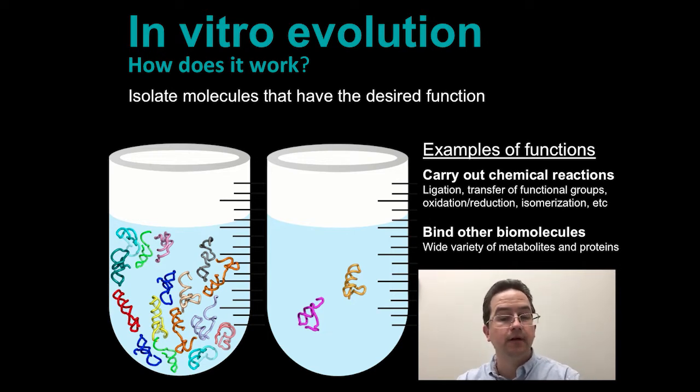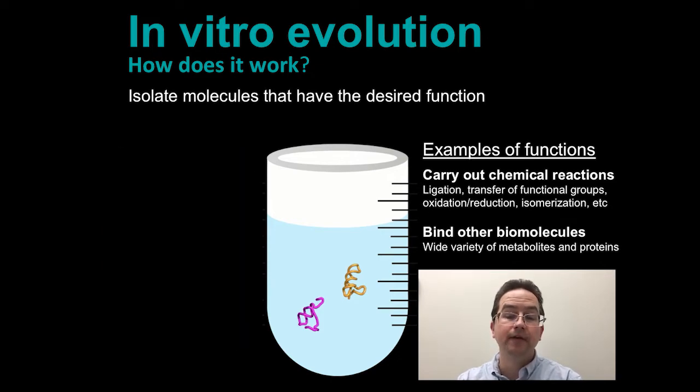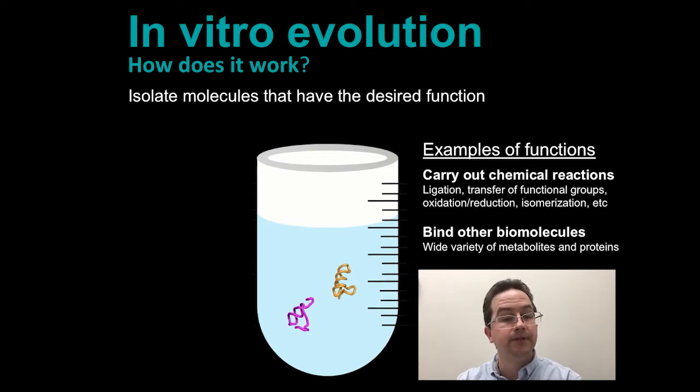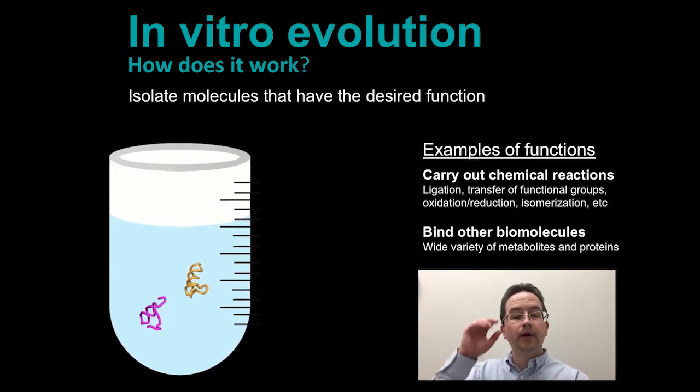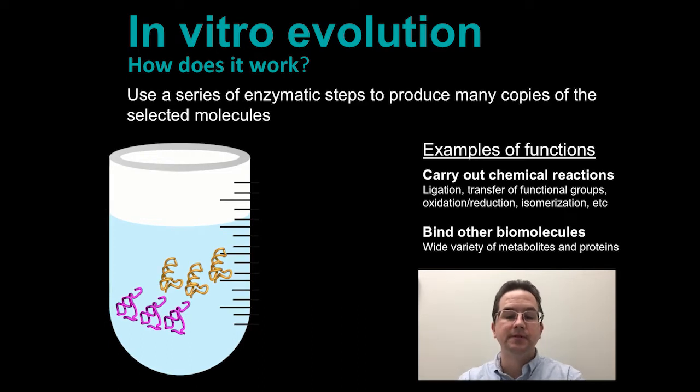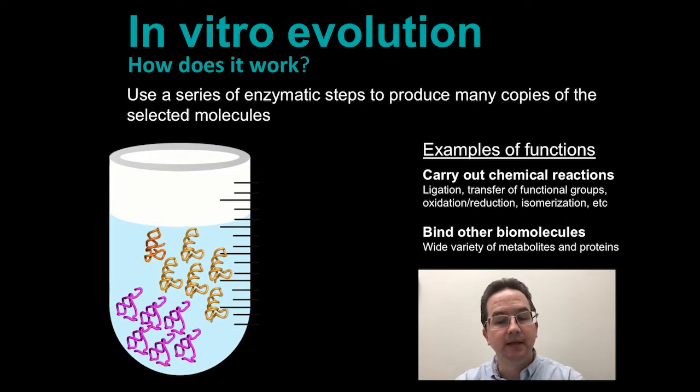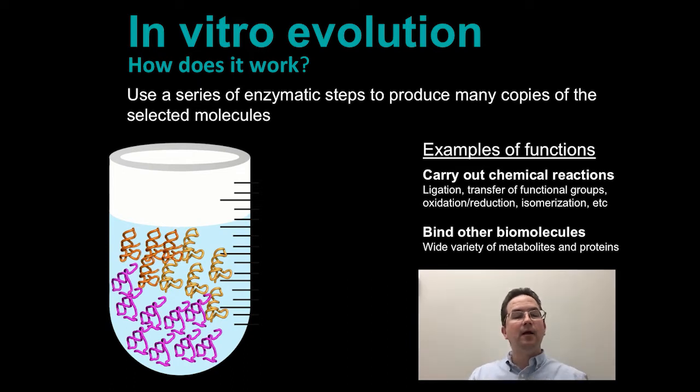Now that we've isolated our functional molecules, we are going to throw away all the others and then take the surviving molecules and use a series of enzymatic steps to make many copies of them. In the process of making these copies, sometimes a mistake is made and we end up having a mutation in the population.